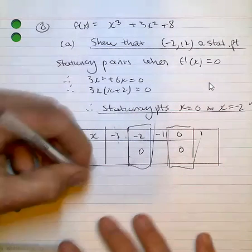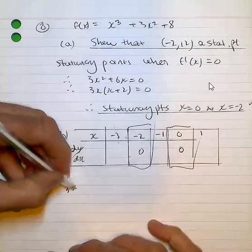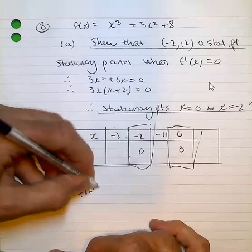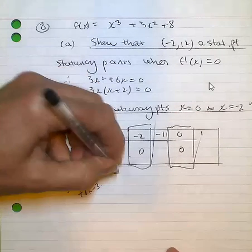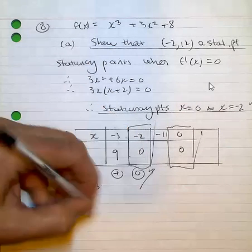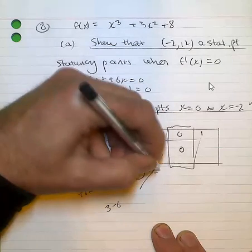And when I plug in -3, I end up with 3 × (-3)² + 6 × (-3), which is going to be 9. It's positive. -2 to 0. And when I plug in -1, I've got 3 - 6, which is -3.